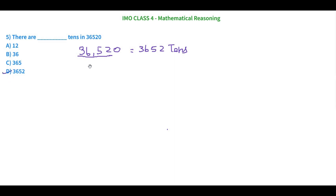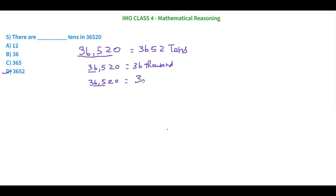For example, if they ask how many thousands are in 36,520, you start from the thousands place and write everything behind it — so the answer is 36 thousands, not just 6. Similarly, if asked how many hundreds, start from the hundreds place and write everything: the answer is 365 hundreds. This trick works for any place value question — always start from the place that is asked.